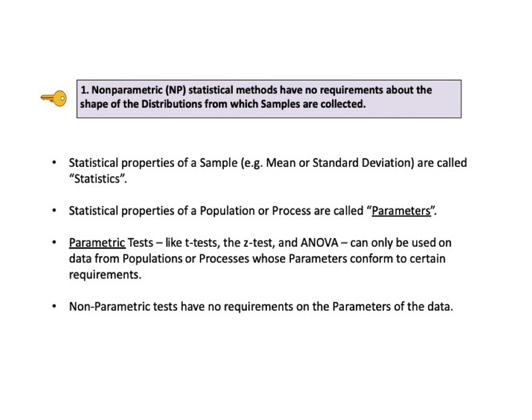Now let's take a closer look at each key to understanding. Key number one says nonparametric, NP, statistical methods have no requirements about the shape of the distributions from which samples are collected. Statistical properties of a sample — for example, mean or standard deviation — are called statistics. Statistical properties of a population or process are called parameters. Parametric tests, like t-tests, the z-test, and ANOVA, can only be used on data from populations or processes whose parameters conform to certain requirements. But nonparametric tests have no requirements on the parameters of the data.